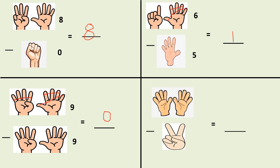Now let's come to the last picture. How many fingers are open? One, two, three, four, five, six, seven, eight, nine, ten — ten fingers. And how many fingers are open in this picture? Two. It means out of ten fingers, I have to remove two fingers. How many fingers am I left with? Just count: one, two, three, four, five, six, seven, eight. So my answer will be number eight, because two fingers are removed.